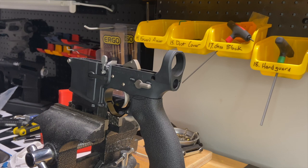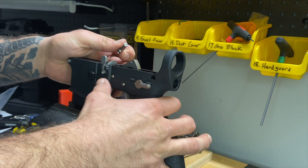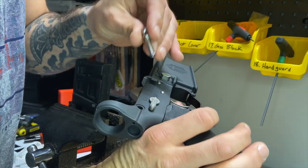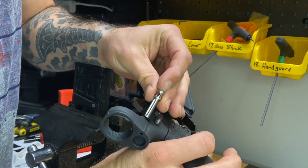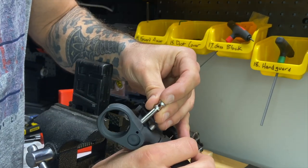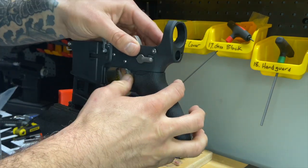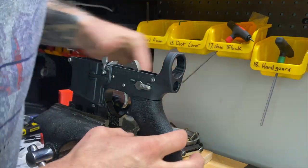Alright, step number 11, 12 buffer detent, buffer tube. Actually step number 10 takedown pin. They all kind of go together. So take your takedown pin, groove facing the rear of the gun. I'm just going to try to angle this well.